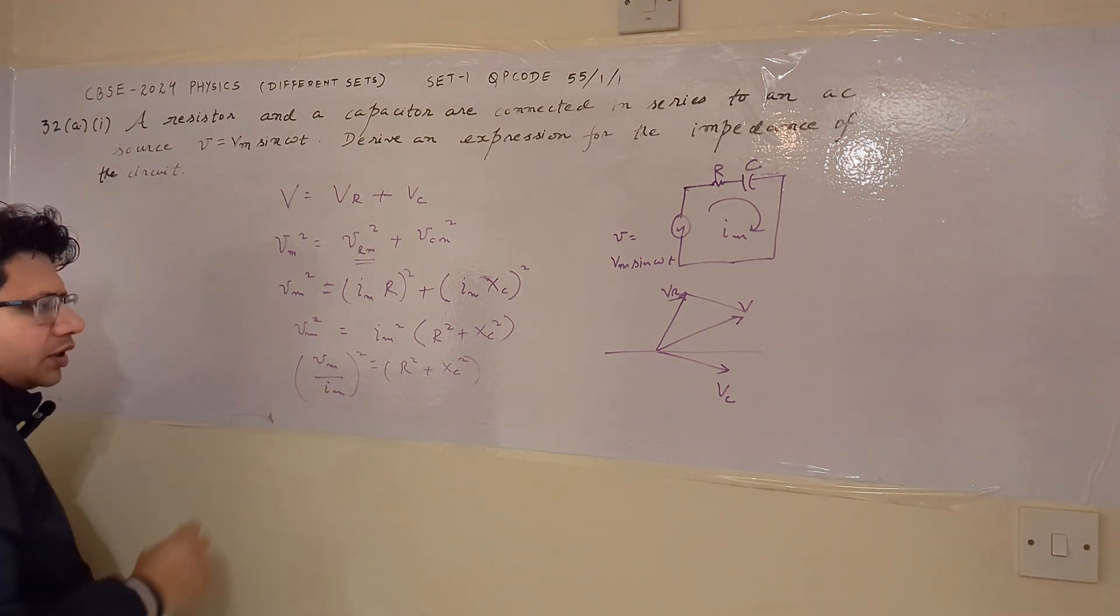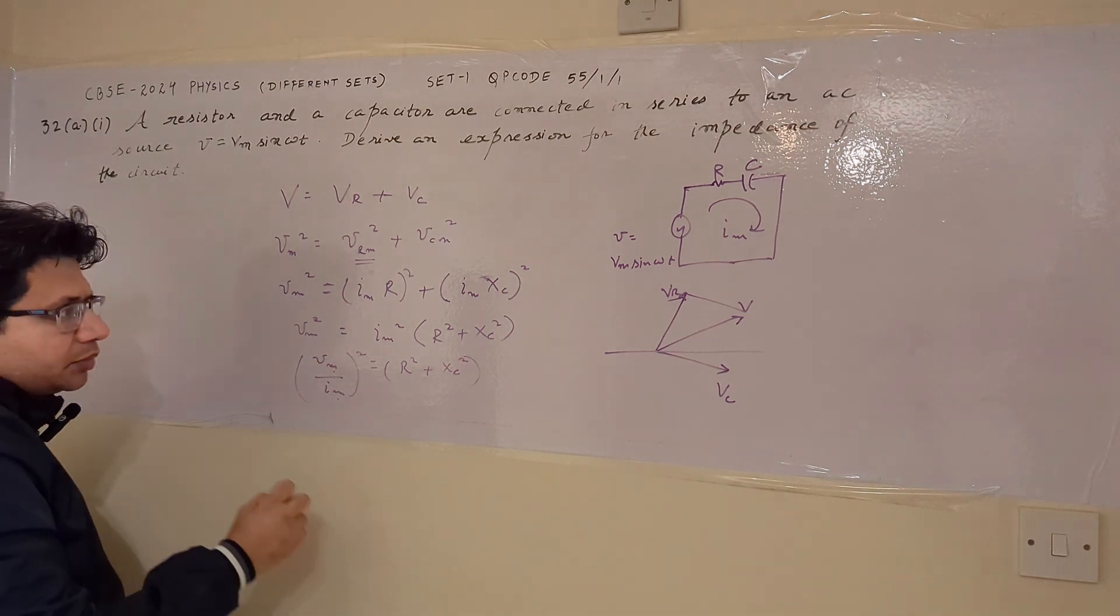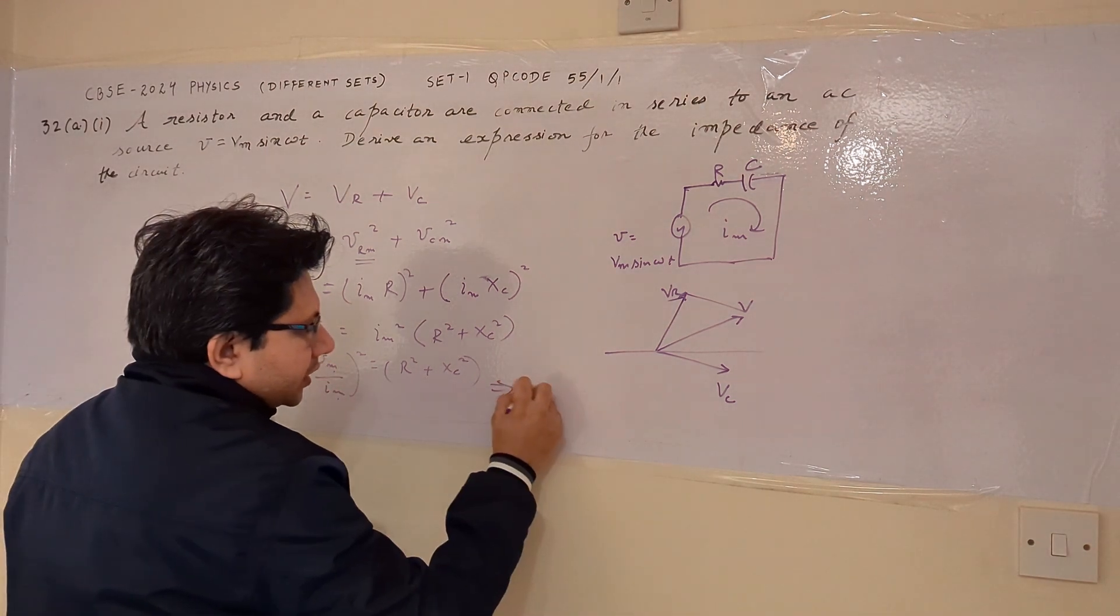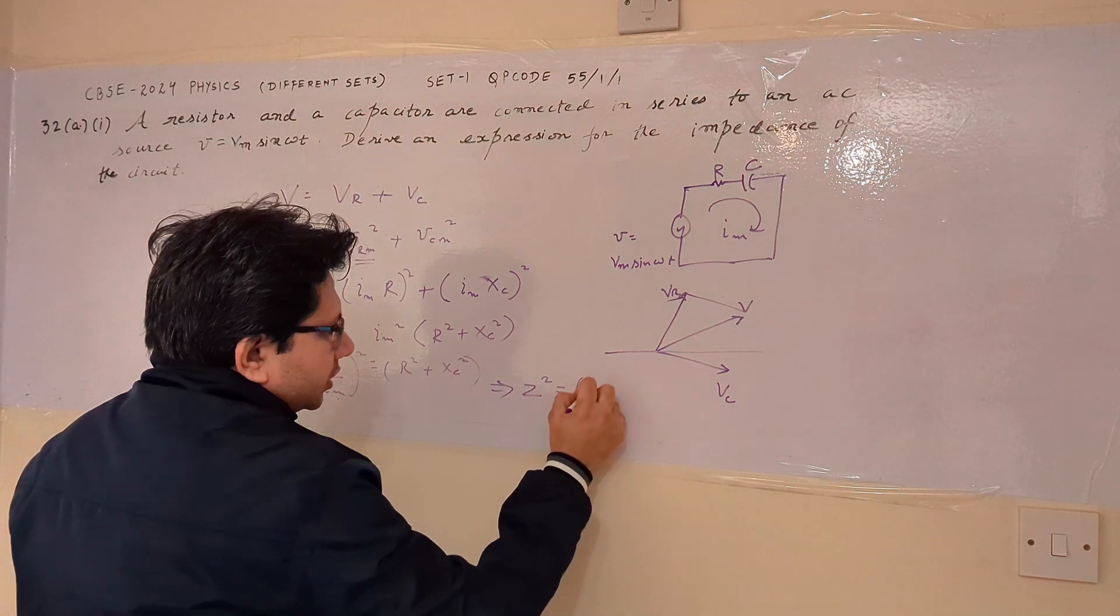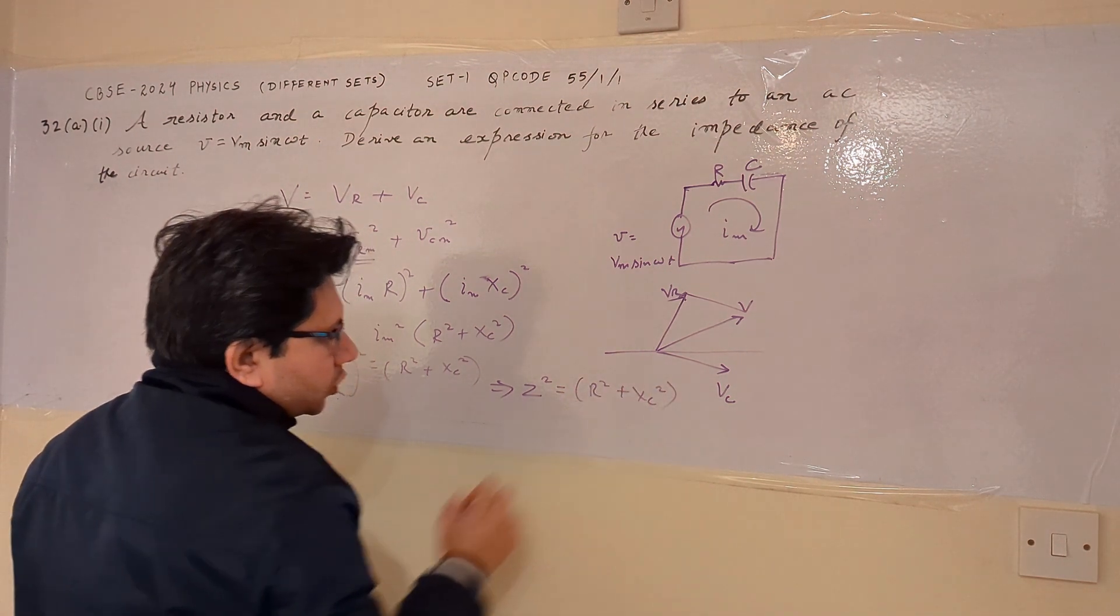Now V upon I is nothing but, Vm upon Im is nothing but the impedance. So it implies that the impedance square is equal to R square plus Xc square.